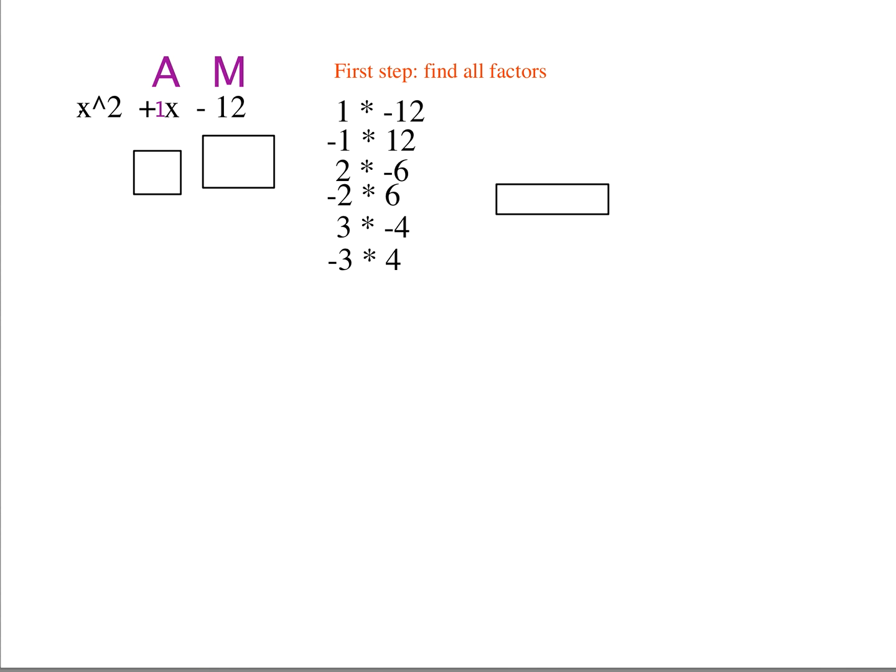So we're going to go through each of these and find which two will add up to be positive 1. So 1 plus negative 12 is negative 11, so that's not the correct one. And then negative 1 plus 12 is a positive 11, so that doesn't work either.